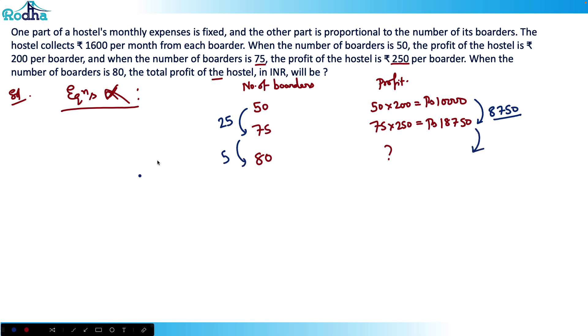25 corresponds to 8750, so 1 corresponds to 8750 by 25, and 5 corresponds to 8750 by 25 into 5. This gets cancelled and equals 1750. That means there will be an increase of 1750.